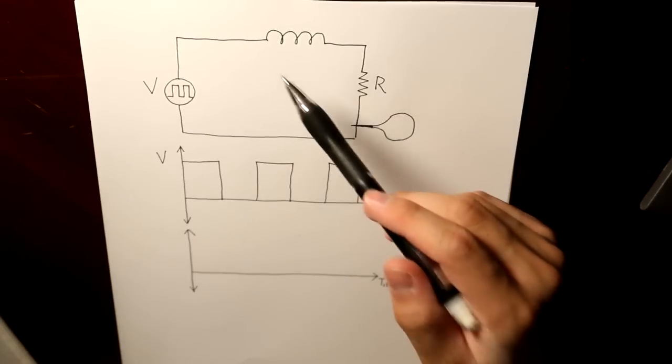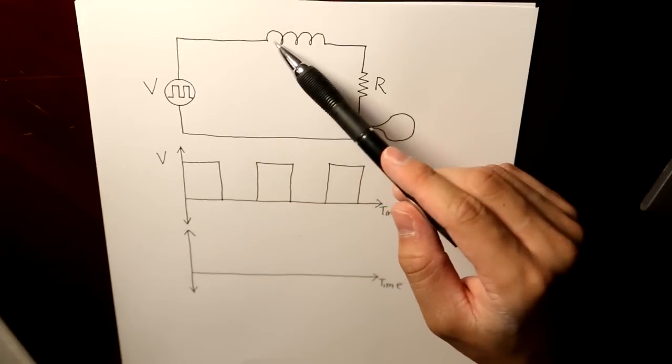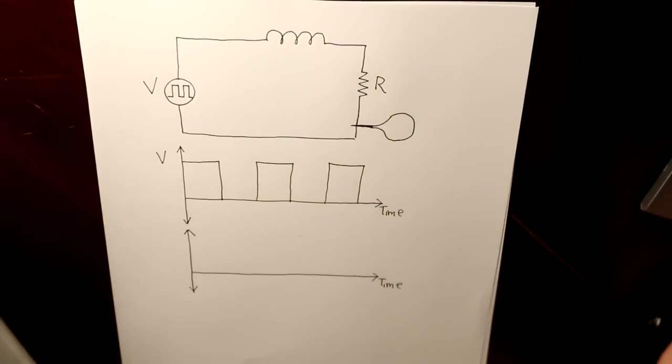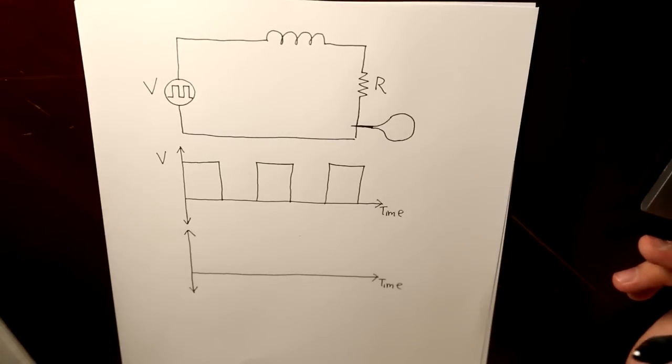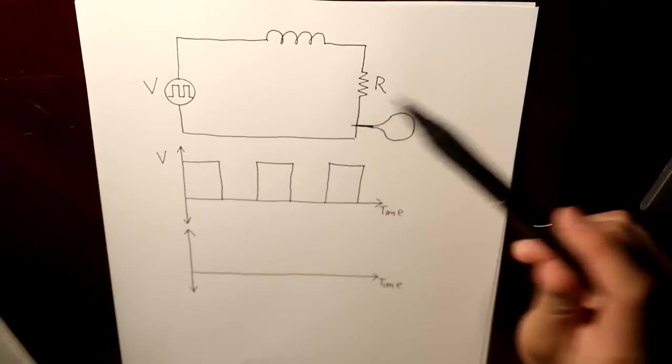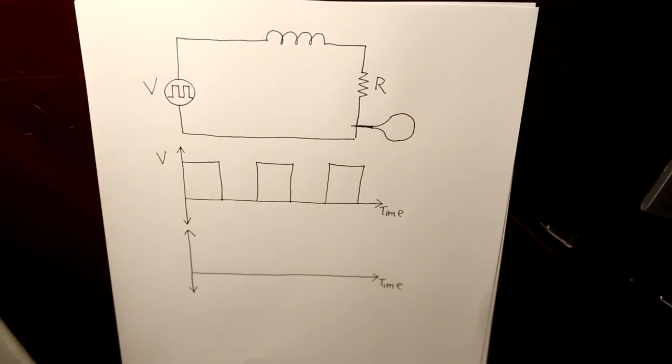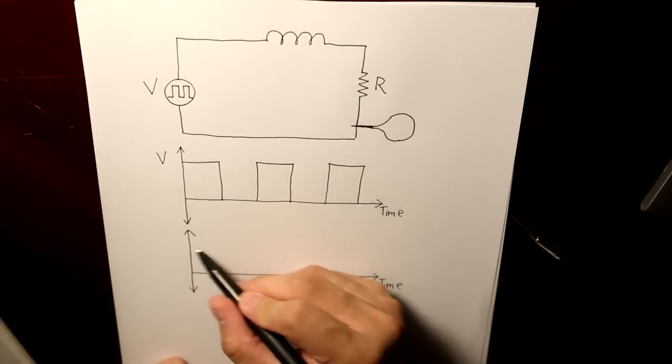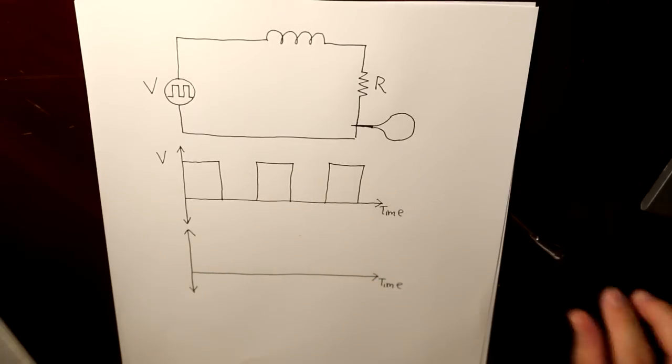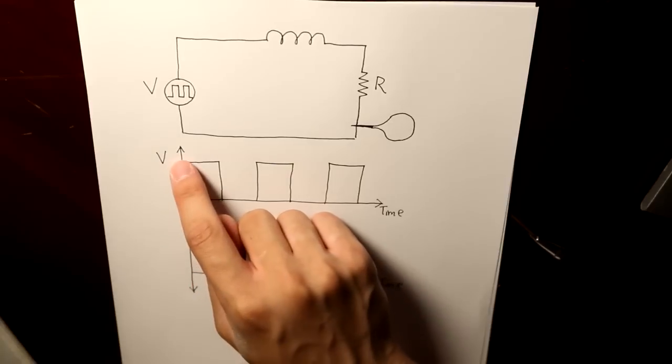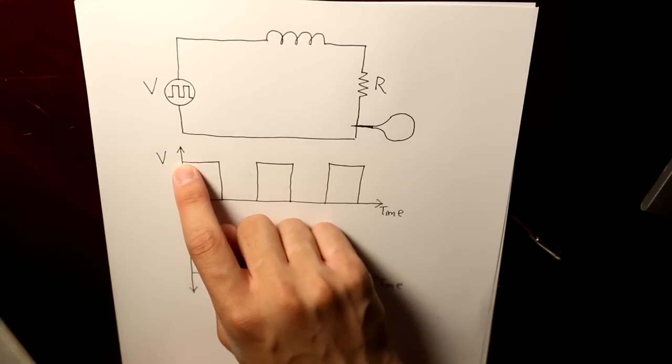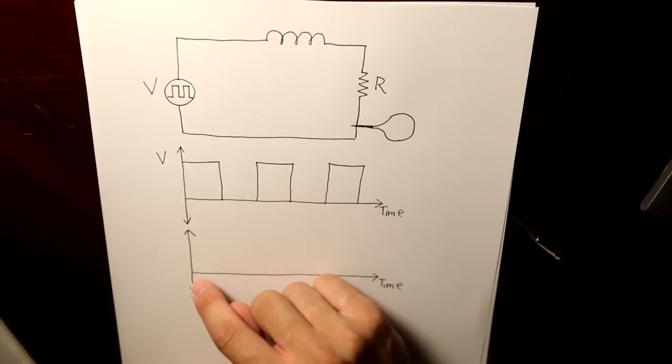Well, for one, since current is passing through this coil, the coil is going to store energy in its magnetic field. So essentially, there's going to be a delay since it has a time constant. So it's not going to behave like where the voltage suddenly instantaneously goes up to this value. The current is not going to behave like that.